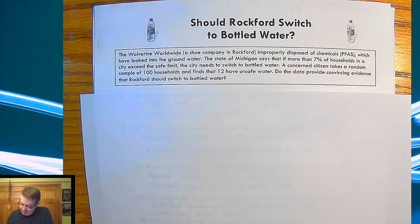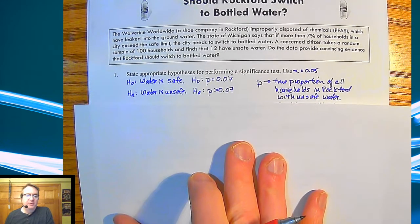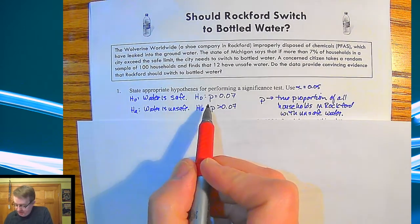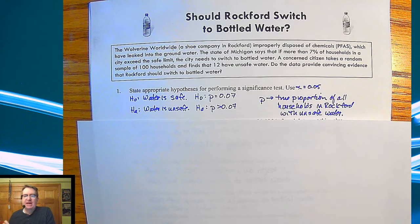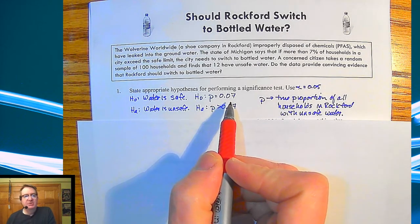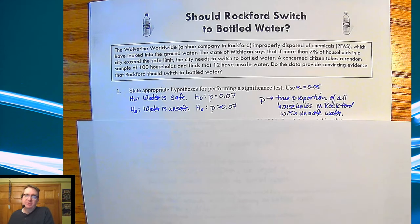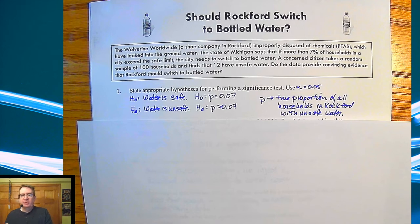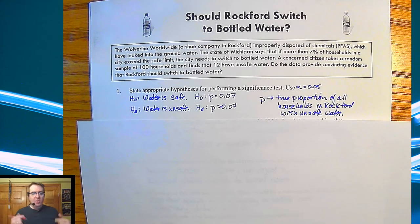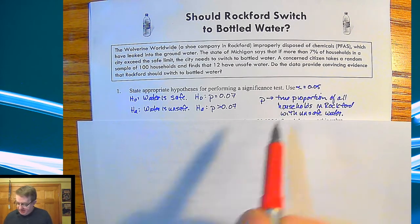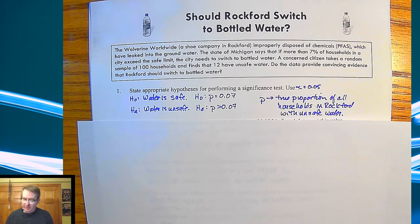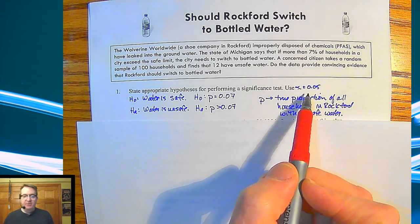The first thing that we have you do is go through and state the hypotheses. First one, null hypothesis, the water is safe. P is equal to 0.07. Occasionally, sometimes students will ask, well, what happens if it's less than 0.07? And again, remembering we're going for worst case scenario. If we use a value of 0.07, that's going to give us the most extreme option in terms of giving us numbers that we'll use. Water is unsafe is our alternative hypothesis, and so we're saying that P is bigger than 0.07. And P is the true proportion of all households in Rockford with unsafe water, and we're using an alpha value of 0.05.